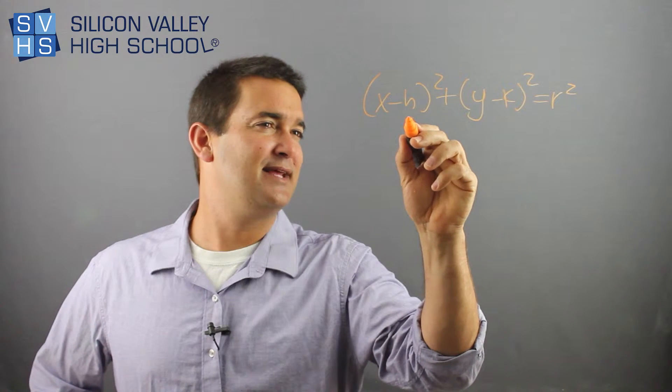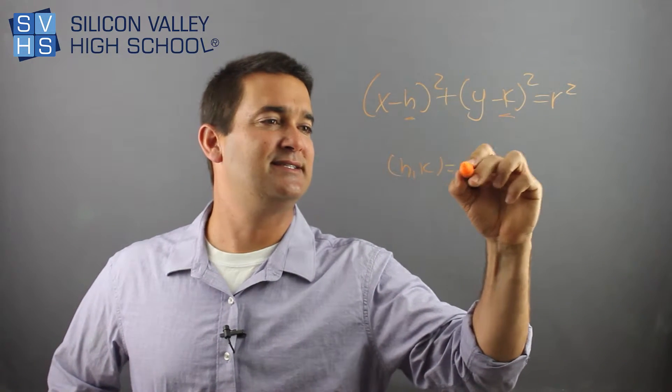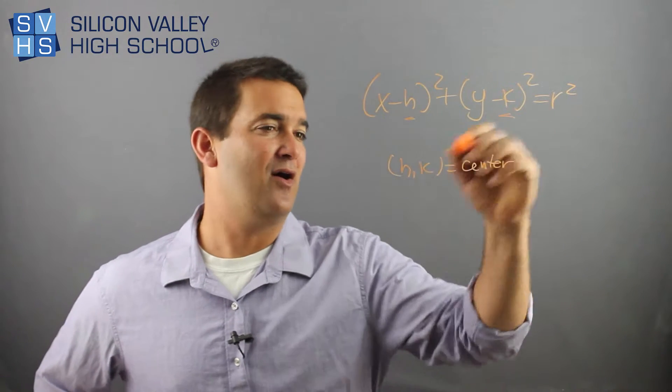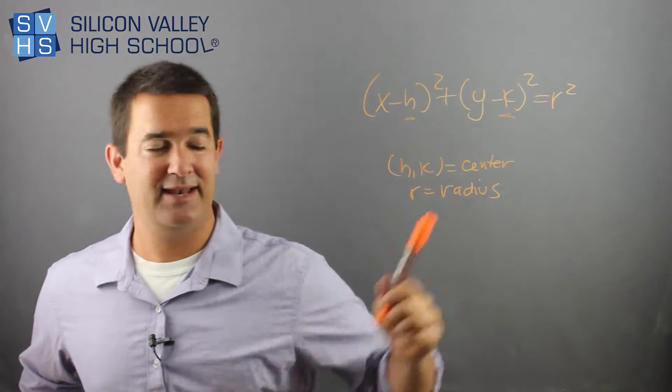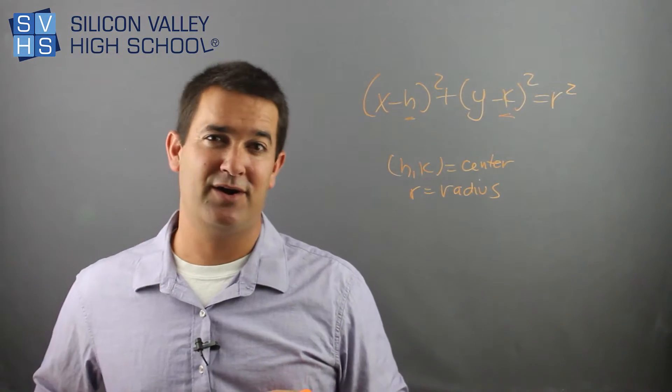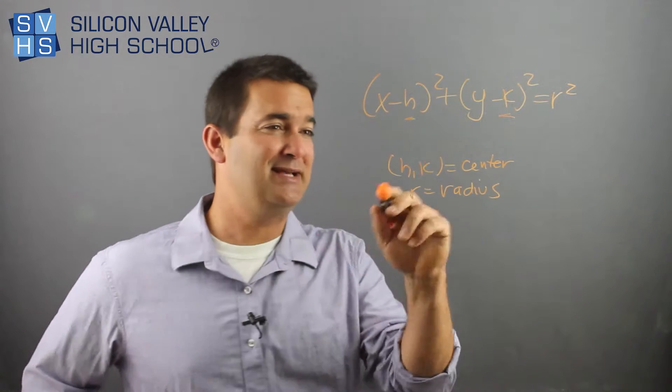But what it is is h, k, this little point h, k, is the center of any circle. And then r is the radius. Don't be confused that it ends up with r squared and not just r. So that'll cause some problems and throw some curveballs at you. But basically, this is it.